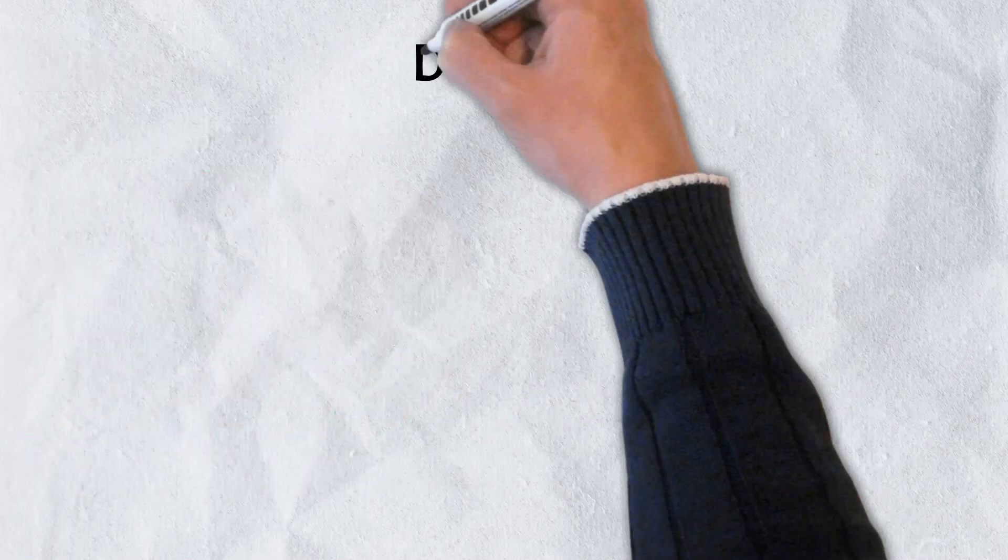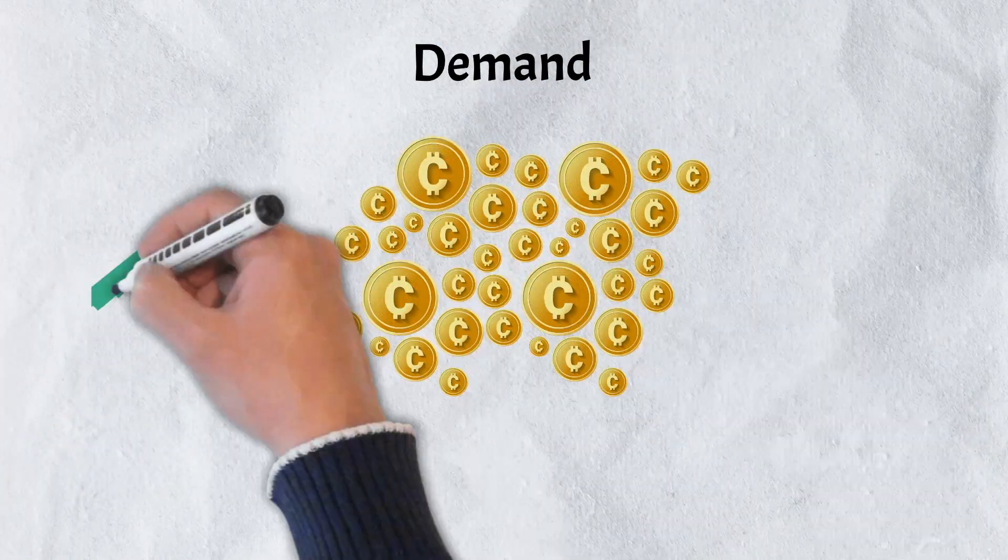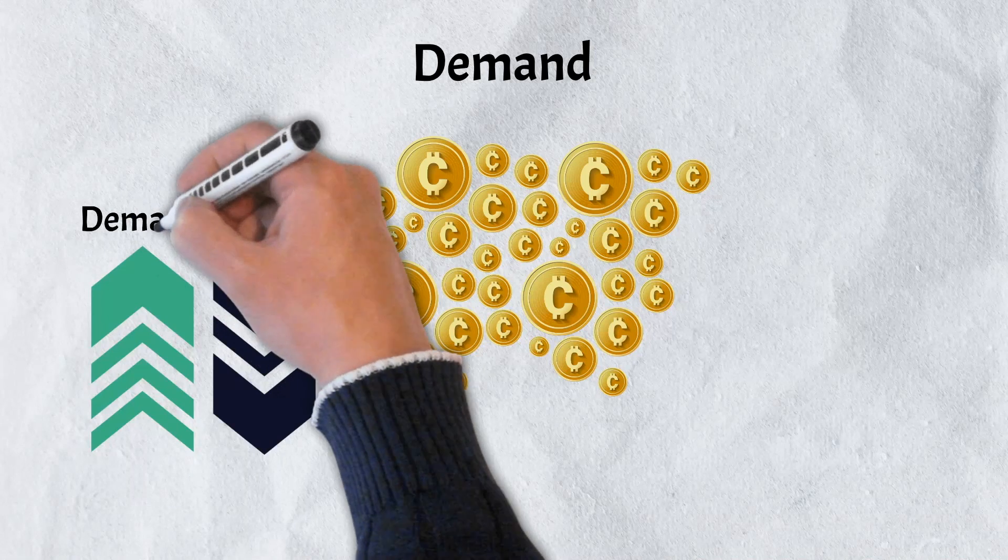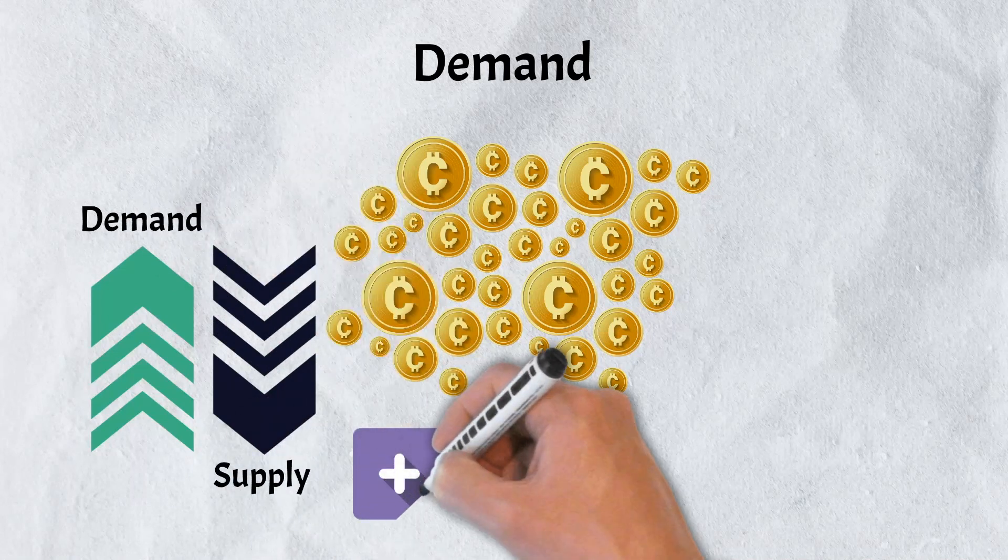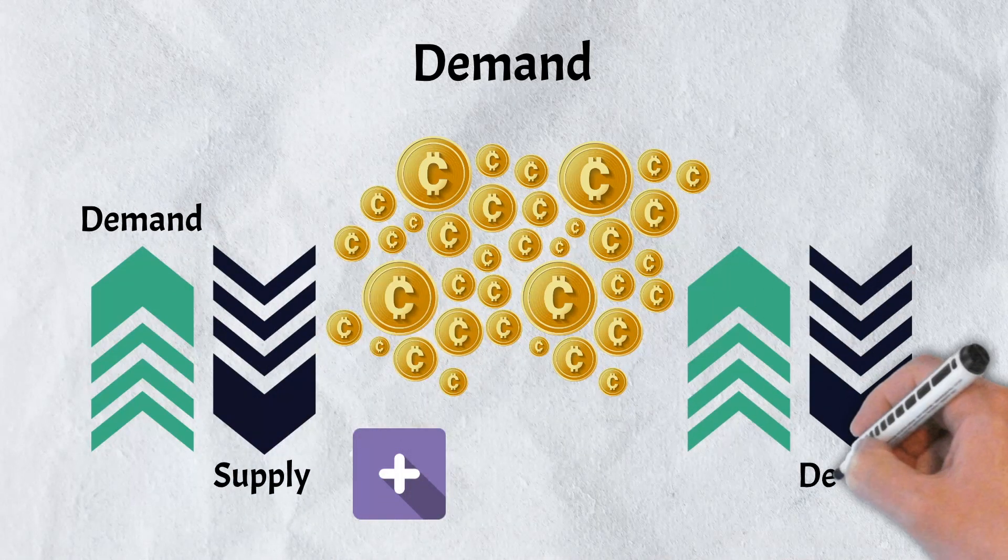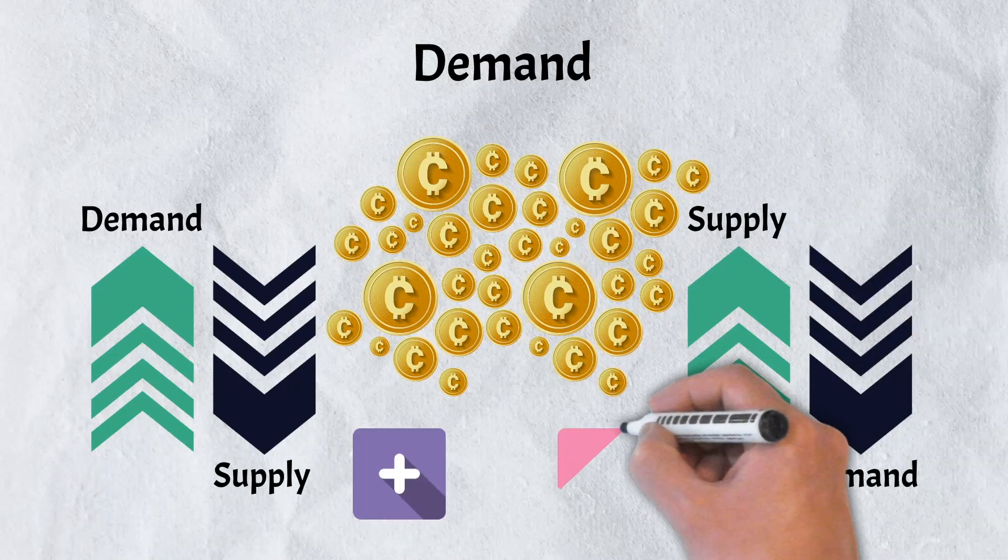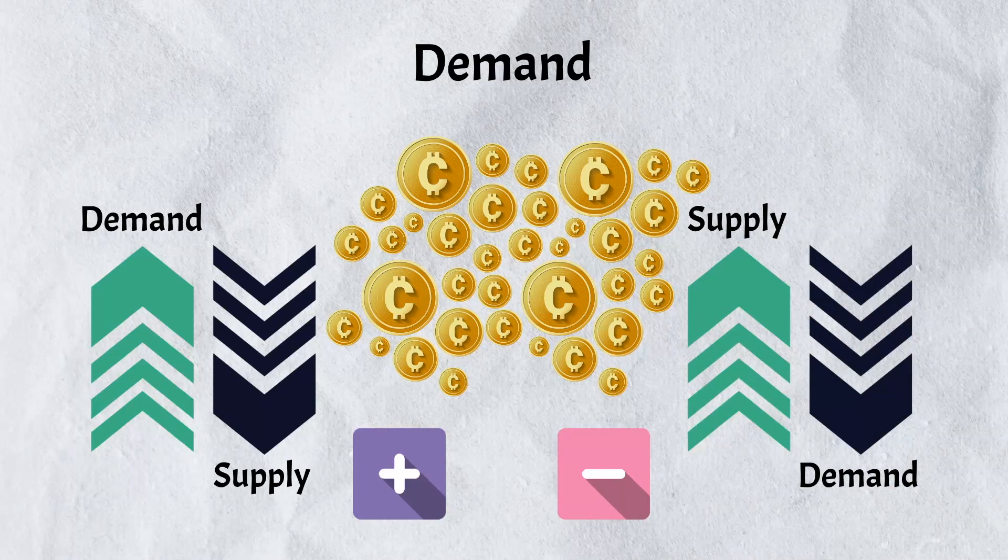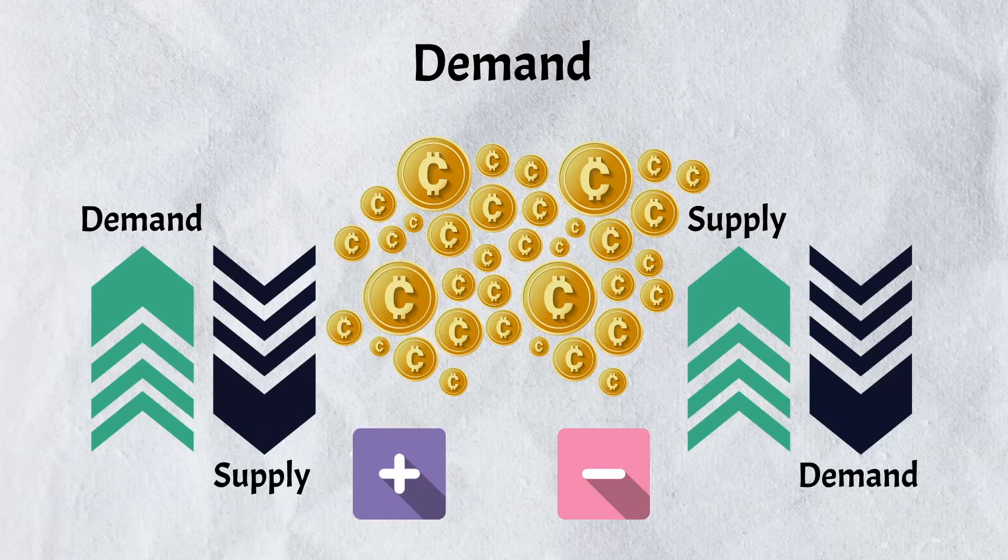Demand goes hand in hand with supply. If there is great demand for a token but only limited supply, the price of the token will rise. Vice versa, if there is little demand but great supply, the price will fall. There are other factors that impact demand, but more times than not, the greatest factor is supply.